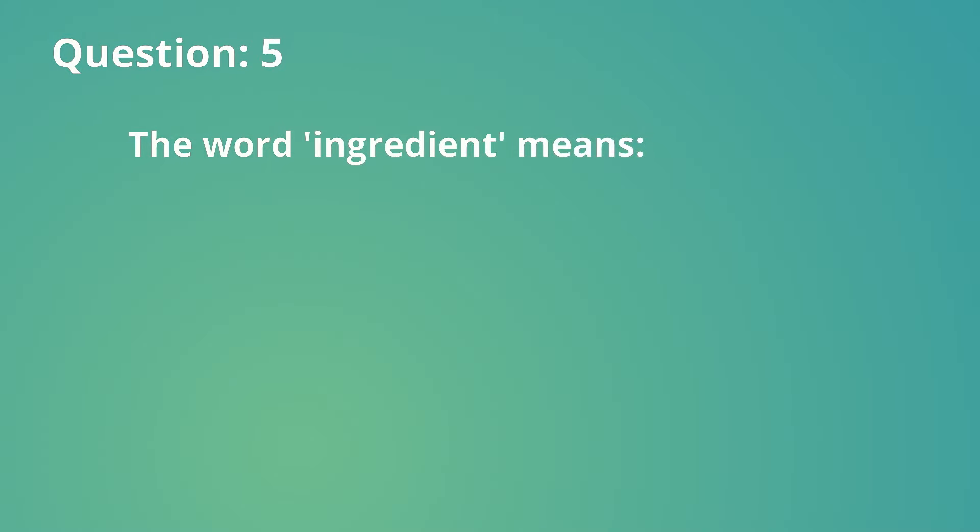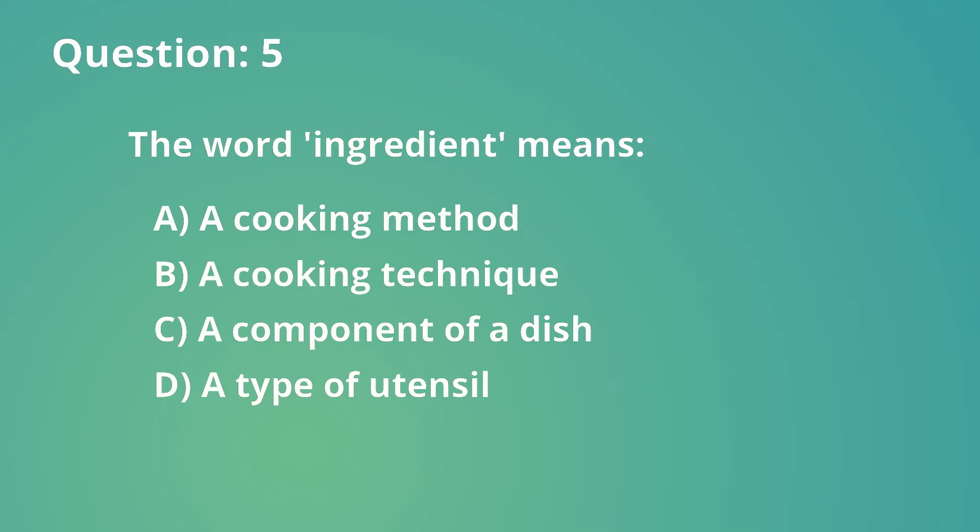Question number 5. The word ingredient means: a. A cooking method, b. A cooking technique, c. A component of a dish, d. A type of utensil.